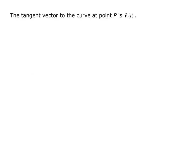The tangent vector to the curve at point P is r prime t. So in other words, you just take your r of t that parameterizes the curve, it will be a vector function, and you take the derivative.